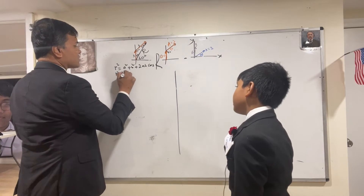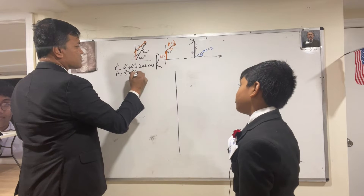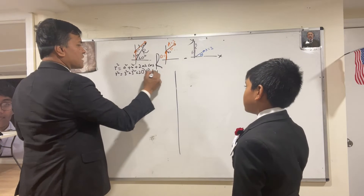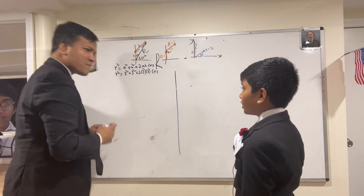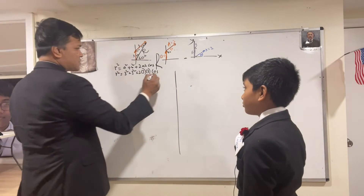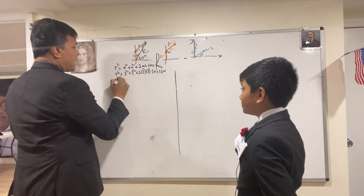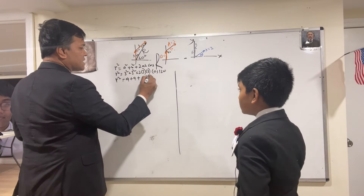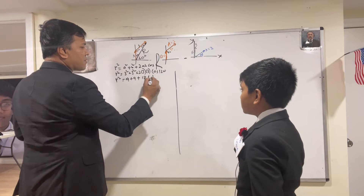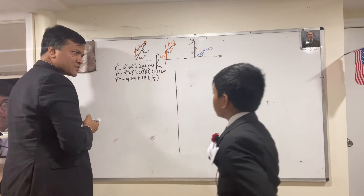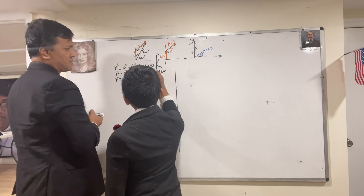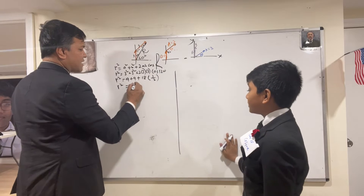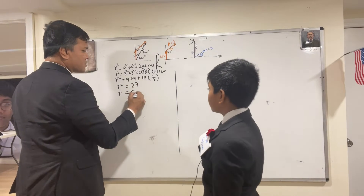So R squared equals 3 squared plus 3 squared plus 2 times 3 times 3 times cosine — can you tell me what is the angle? 120. That is correct. And R squared is 9 plus 9 plus 18 multiplied by one-half because cosine 120 is one-half. So R squared is 27. Therefore R is 5.2.